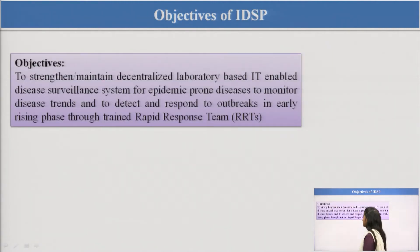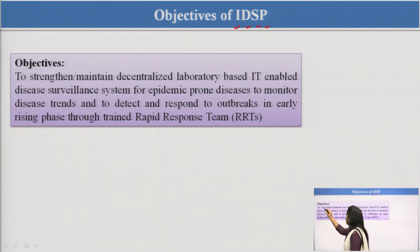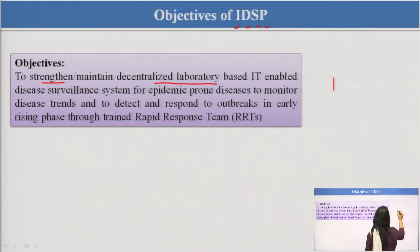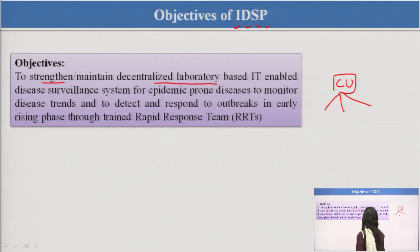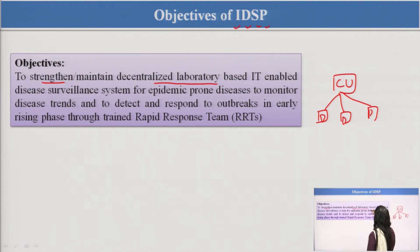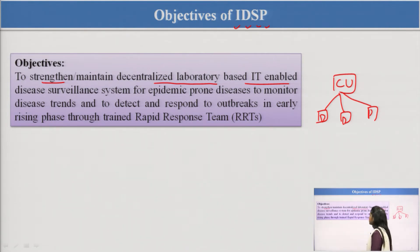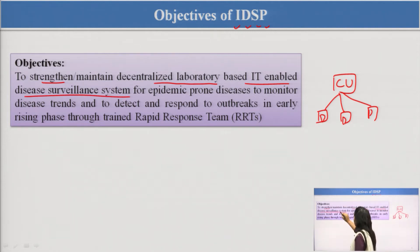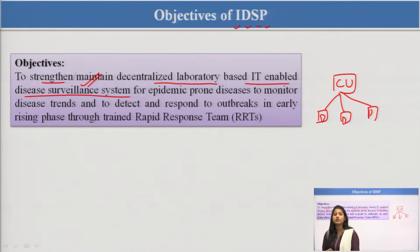Now let us see the objectives of the Integrated Disease Surveillance Program. The first objective is strengthening and maintaining decentralized laboratories. There is a central unit controlling other laboratories, and the local laboratories are called decentralized laboratories, based on IT-enabled information technology — a decentralized laboratory-based, IT-enabled disease surveillance system — especially for areas where disease has spread.